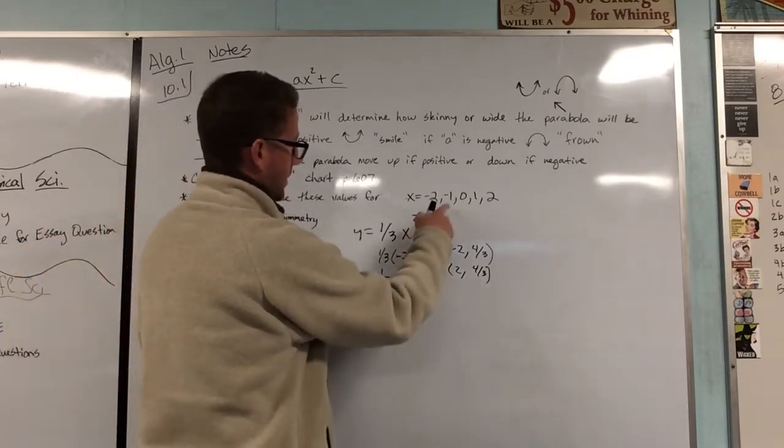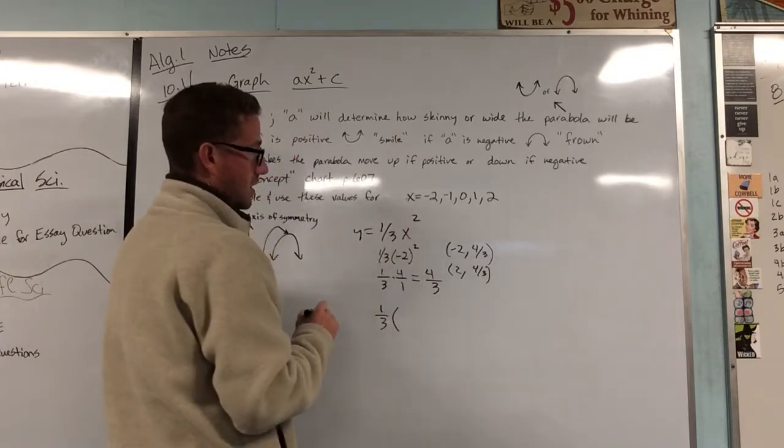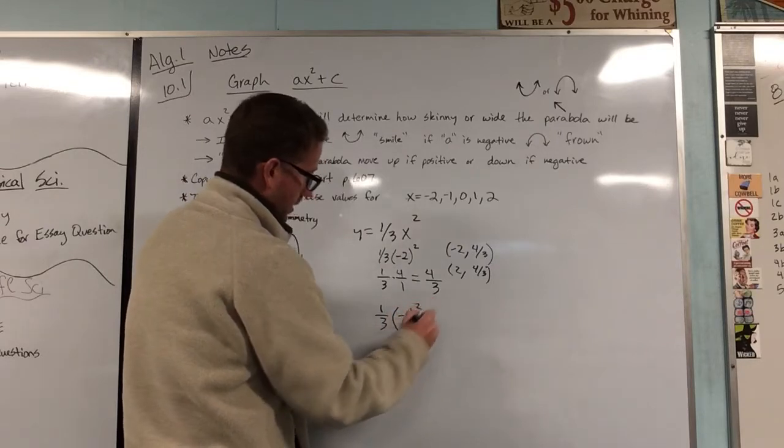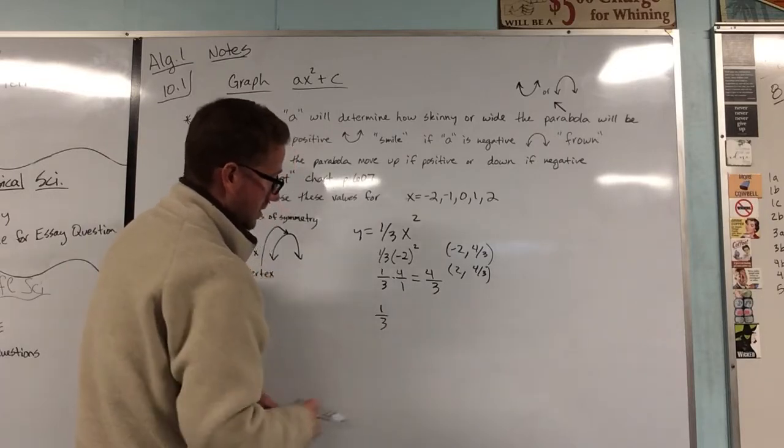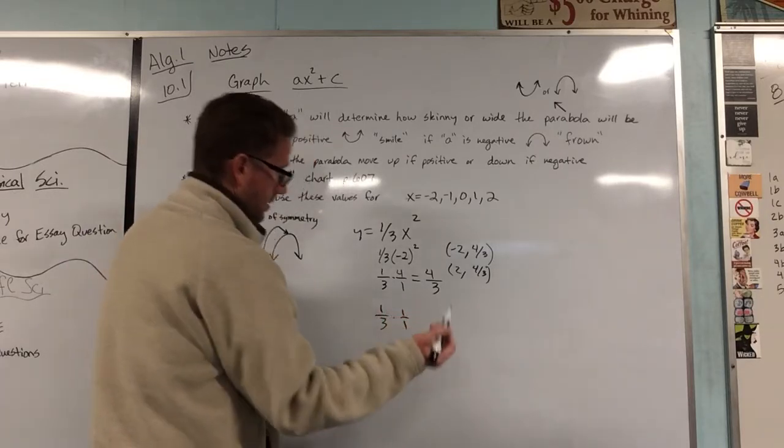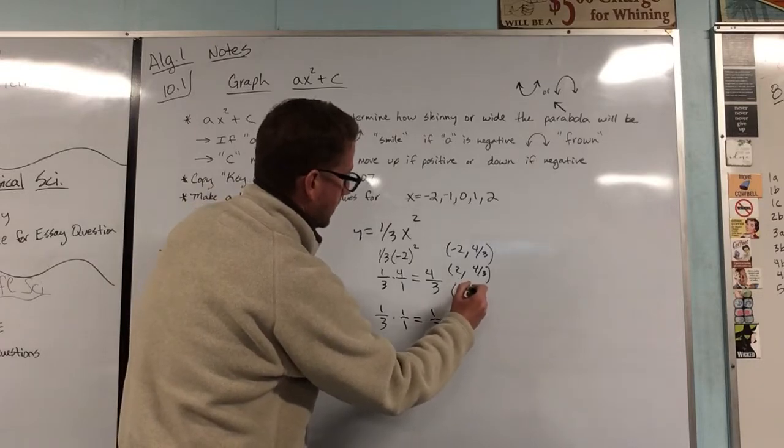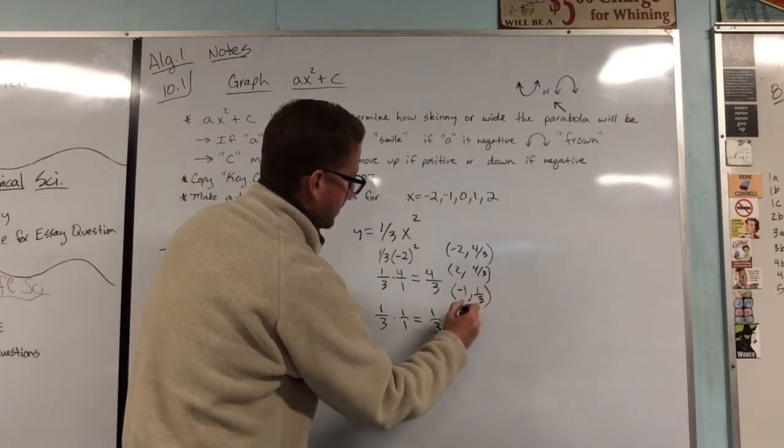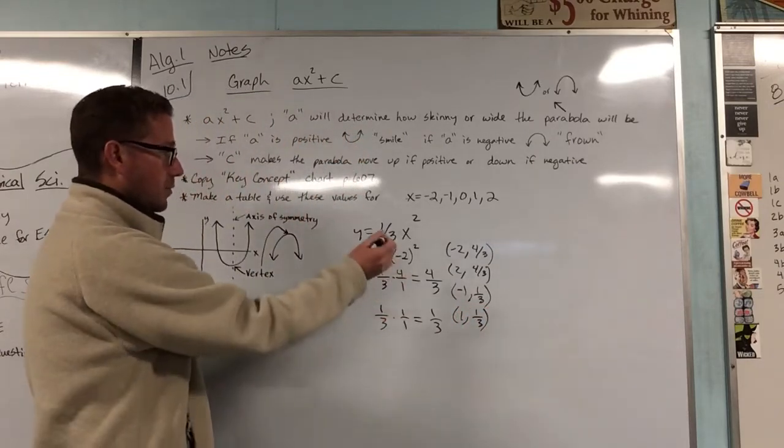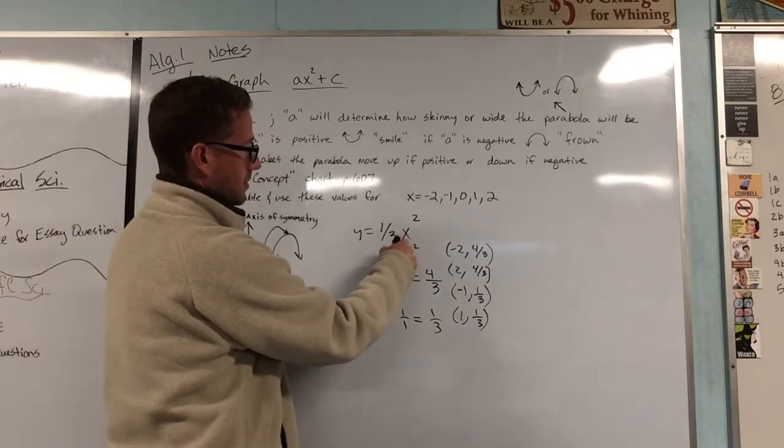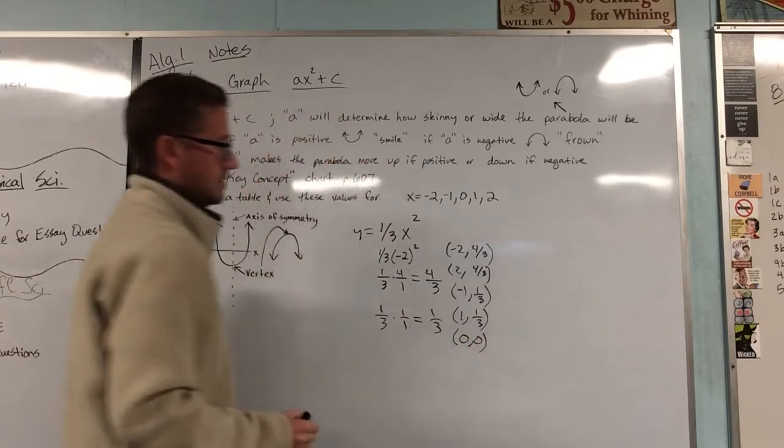Now when we plug in a negative 1, you have 1/3 and negative 1 squared. What's that going to be? It's going to end up being a positive 1. So we're going to erase that, save some space, and that's just 1 over 1 giving us a positive 1/3. So that means when we plug in a negative 1, we get out a positive 1/3. When we plug in a positive 1, we get out a positive 1/3. When you plug in 0, you'll see 0 squared is 0 and 0 times anything is 0. So that's going to give us 0, 0.